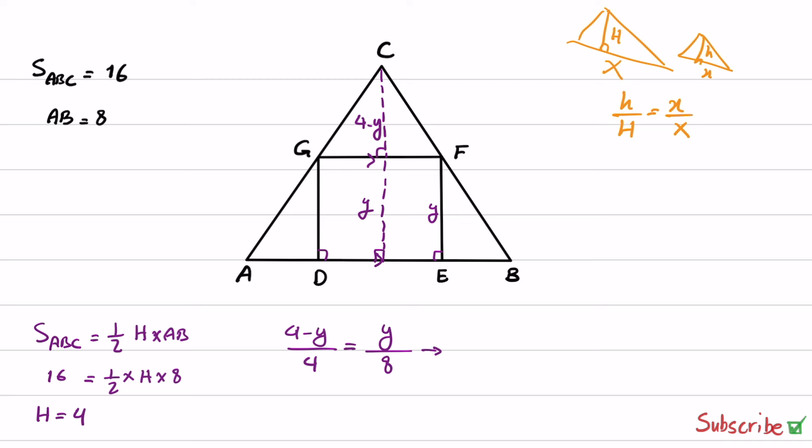Now, if we multiply sides, we will have 32 minus 8Y equals 4Y. And from this, 32 equals 12Y. From this, Y is 32 over 12. If you simplify this, we have Y equals 8 over 3.